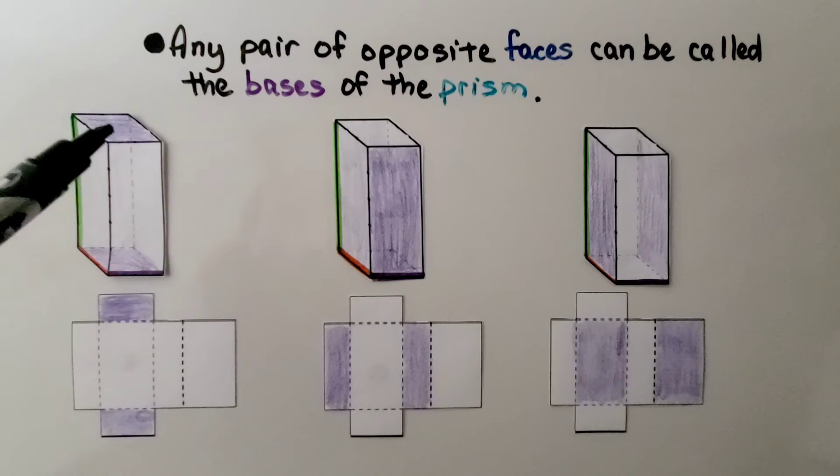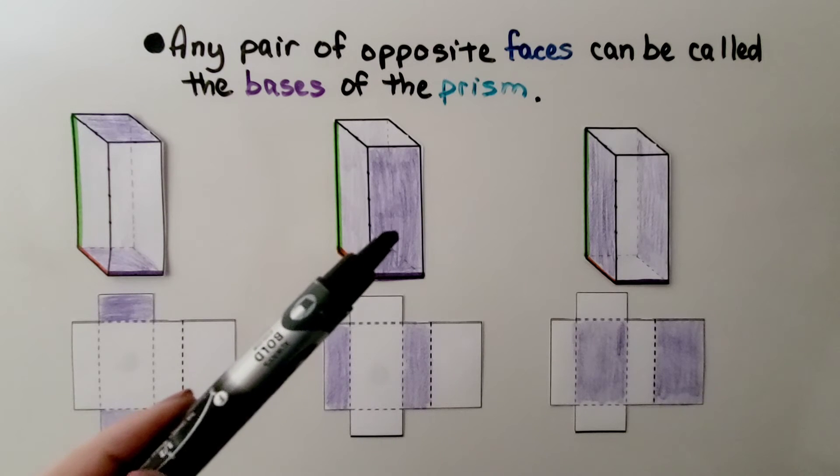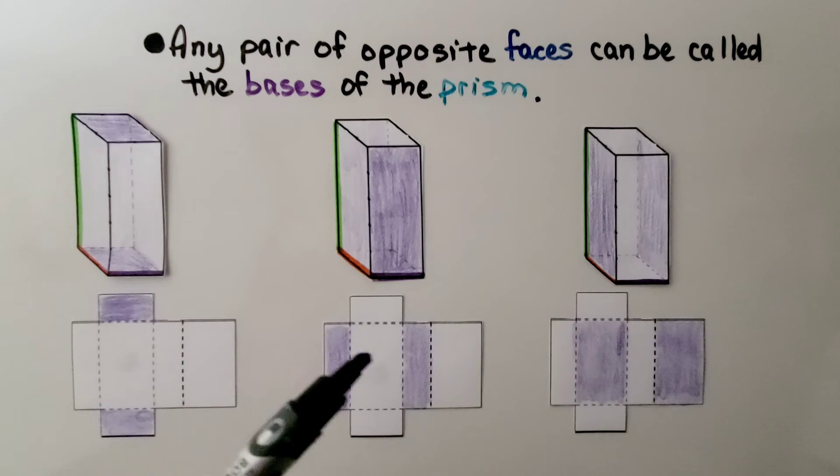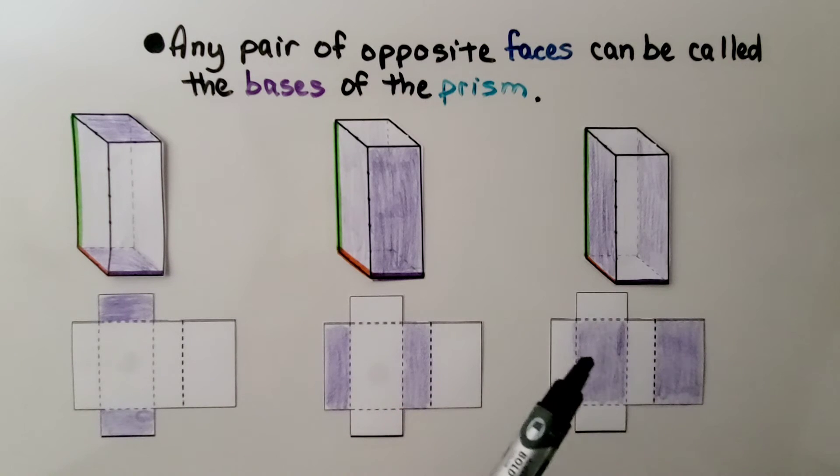Here we've got this top and bottom, which would be this piece and this piece. We could also do this front and the back piece as this piece and this piece. We could also do this side and the other side as this piece and this piece. They're opposite faces, so they can be called bases of the prism.